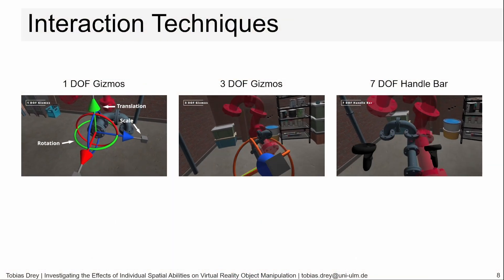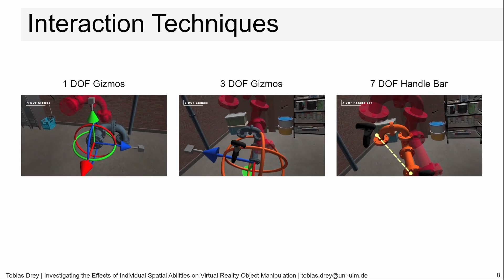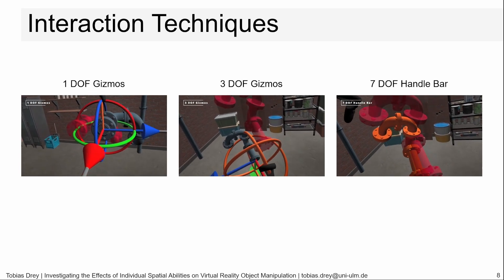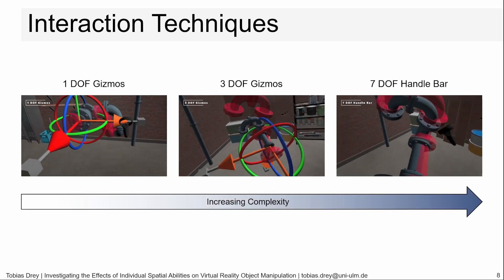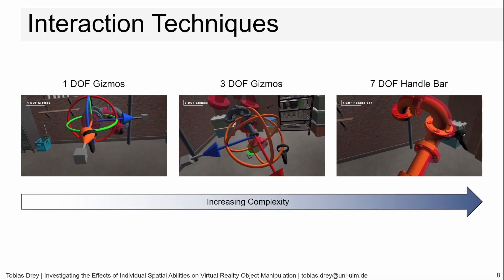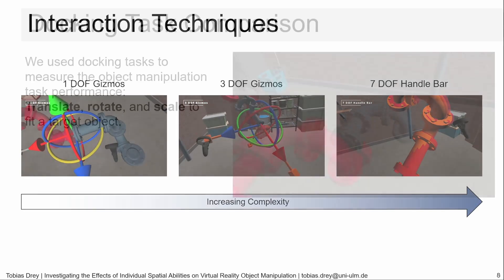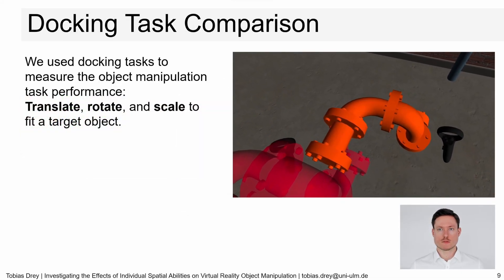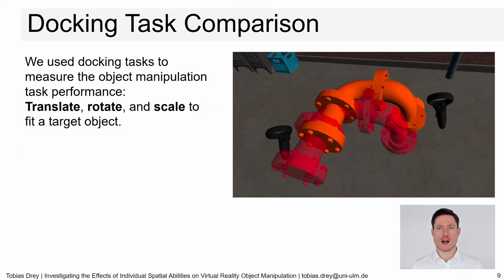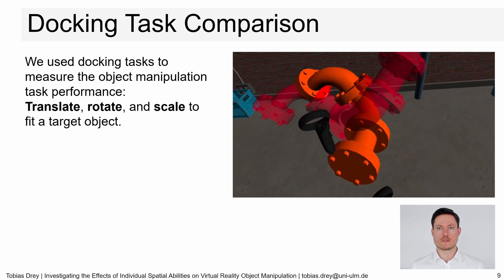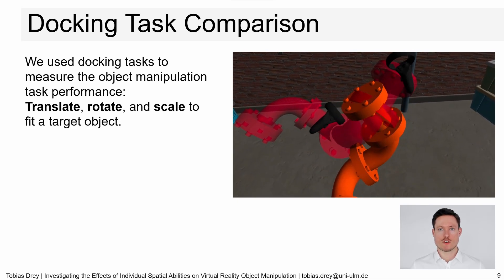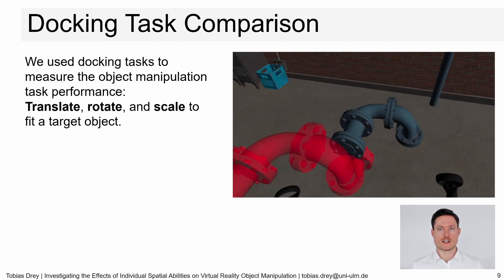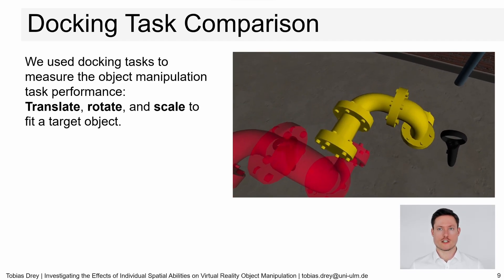This resulted in three conditions for the interaction techniques: one degree of freedom, three degrees of freedom, and seven degrees of freedom. These techniques provide an increasing complexity. Like the interaction techniques, object manipulation tasks can also be divided into the same one to nine degrees of freedom spectrum. As for many object manipulation studies, we used docking tasks to measure the task performance of the interaction techniques.